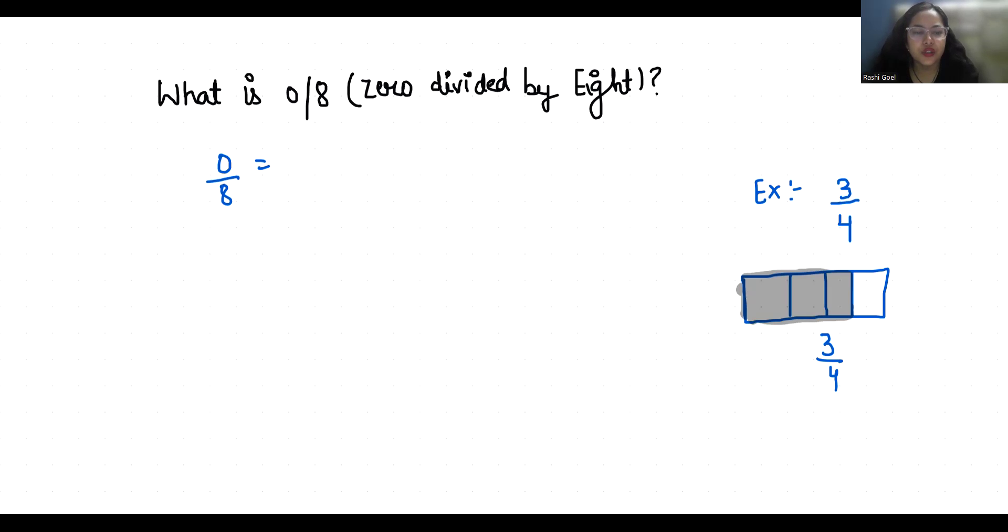So 0 divided by 8, it's not possible. It is equal to 0 only.